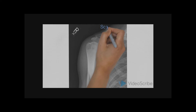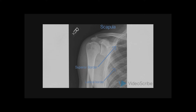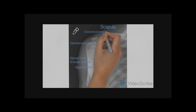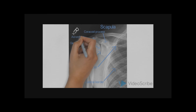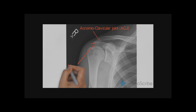Then we move on to assessing the scapula. With the scapula, we wish to identify the lateral border, the superior border, and, if visible, the medial border. Once these borders have been assessed and identified, we then move on to checking the glenohumeral joint. We then move on to assessing the coracoid process, which is an important attachment point for the short head of the biceps brachii muscle, as well as many other thoracic muscles and ligaments.